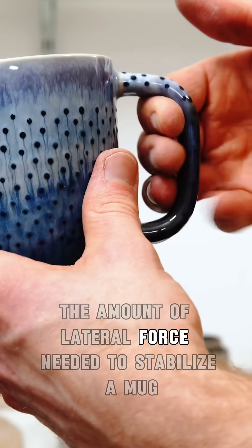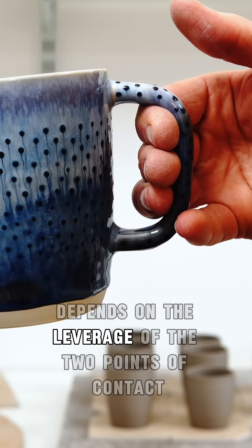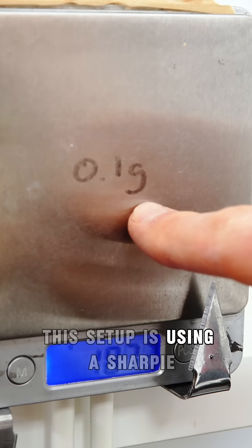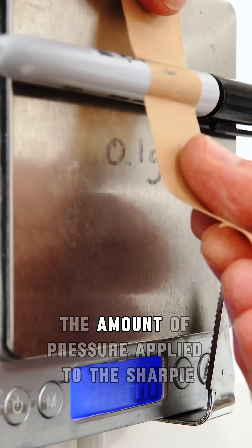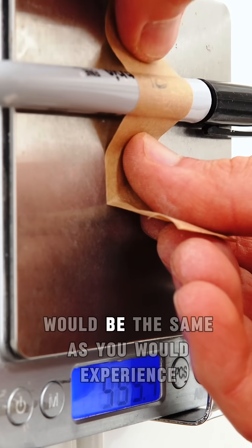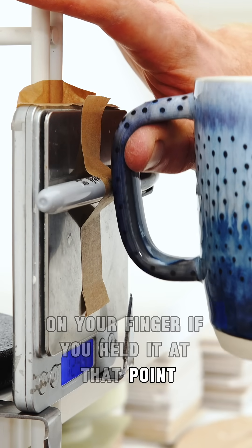The amount of lateral force needed to stabilize a mug depends on the leverage of the two points of contact. This setup is using a sharpie stuck to the scales to simulate the outside finger. The amount of pressure applied to the sharpie would be the same as you would experience on your finger if you held it at that point.